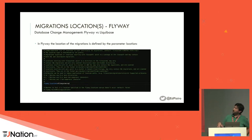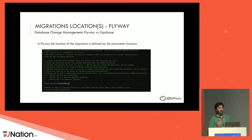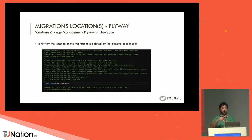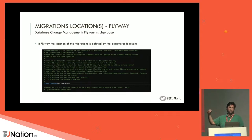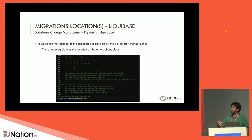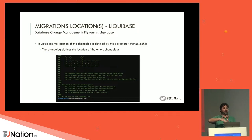For locations in Flyway, you can pass it as a configuration parameter. By default in the CLI you put migrations in the SQL folder, but you can also split by database and add multiple paths to find the migrations. In Liquibase it's different — you just need to say where your main changelog is. From there, Liquibase will know where the other changelogs are.